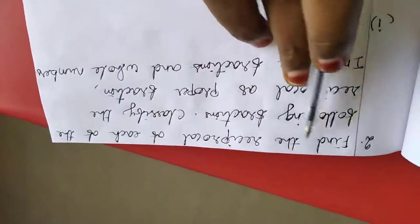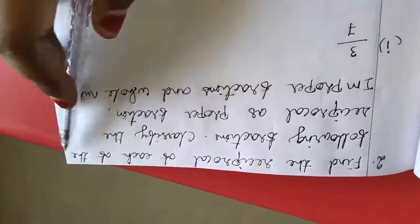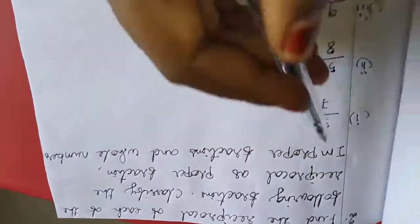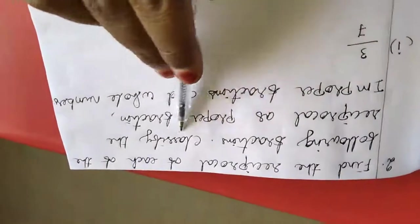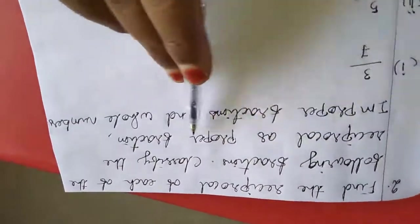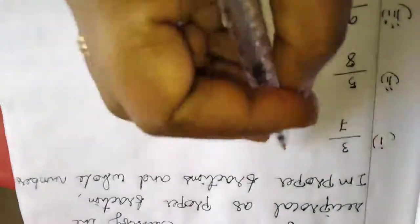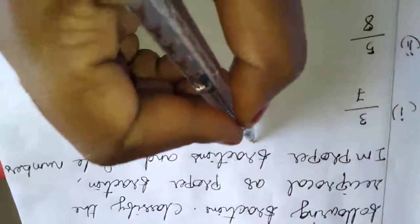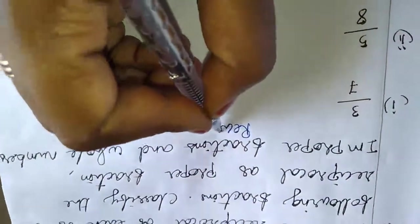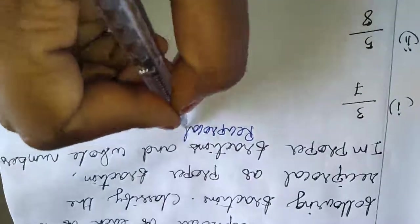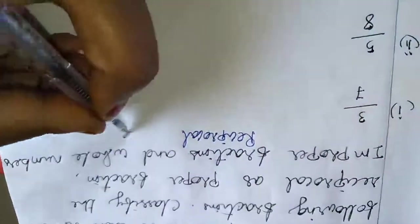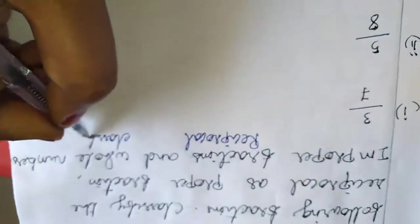Now moving to the second question: find the reciprocal of each of the following fractions. We want to find the reciprocal of the given fractions and classify each reciprocal as a proper fraction, improper fraction, or whole number. I am writing the reciprocal and classification.